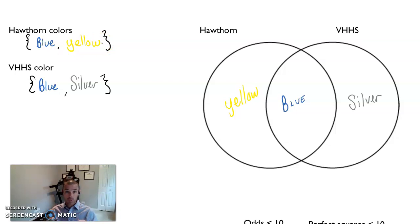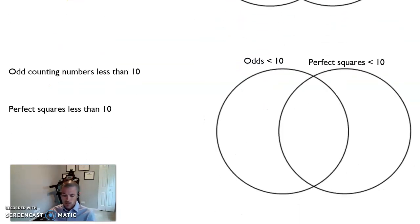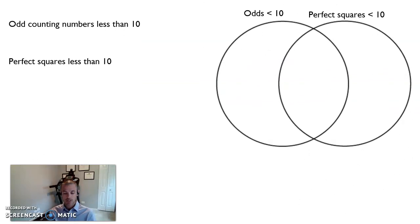and then commas to identify a new term within that set. That's what we're looking to do. So a set is going to have braces on the end representing a set. It's the set of, and then commas are going to separate each term. So write down the odd counting numbers less than 10 in a set notation. Perfect squares less than 10 in a set notation, and then fill out our Venn diagram.